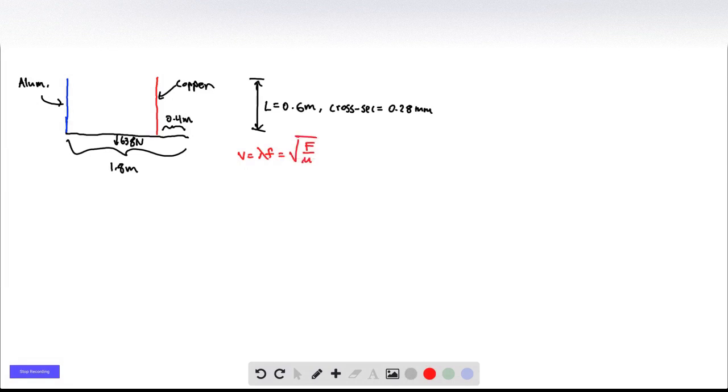So we can calculate lambda because lambda N is NL over 2. Here N is 1, by the way, because we're at the fundamental frequency. We can calculate the tension in each wire by doing some classical mechanics. We can calculate the mass per unit length by calculating M and then plugging in a value for L. So let's break this up bit by bit.